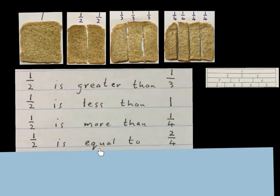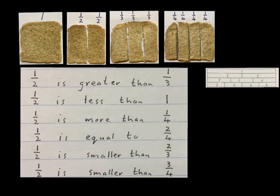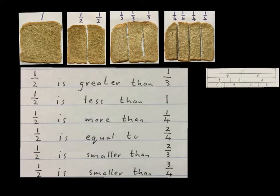The next one says: a half is equal to two quarters. So the half of a slice of bread is the same as these two quarters of a slice of bread. The next one says: a half is smaller than two thirds. The half is less than these two thirds together. The last one says: a half is smaller than three quarters, because three quarters is a half and another quarter. But a child needs to explain that to you, not learn it by heart.